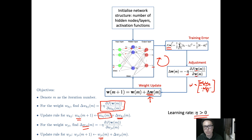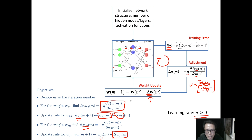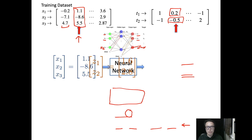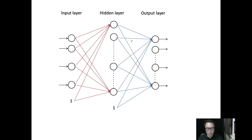Later I will show you the pseudo code for this. In the next slide, I will show you how to define delta WKJ, the connection weight between the hidden layer and the output layer, and delta WJI, the connection weight between the input and the hidden layer.